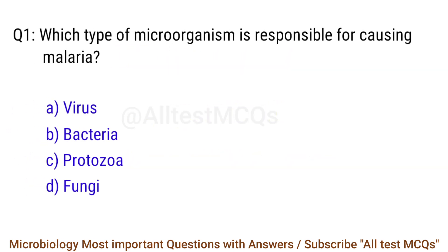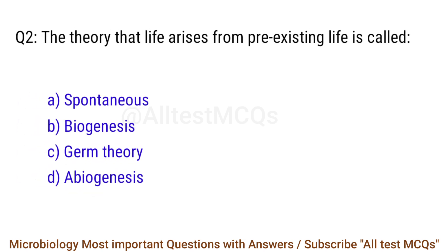Q1. Which type of microorganism is responsible for causing malaria? The right answer is option C: Protozoa. Q2. The theory that life arises from pre-existing life is called? The right answer is option B: Biogenesis.